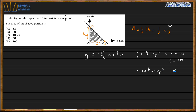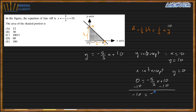To find the x-intercept, we set y = 0: 0 = -5/3·x + 10. Subtracting 10 from both sides gives -10 = -5/3·x. Cross-multiplying gives -30 / -5 = x, so x = 6. The answer is F.